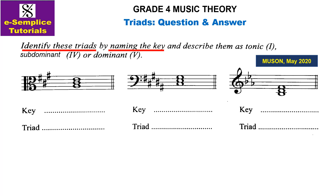This question is from Muzan May 2020. The question says: identify these triads by naming the key and describe them as tonic, subdominant, or dominant. The first triad is in alto clef with three sharps — F sharp, C sharp, and G sharp. This key signature suggests two keys: the major key with three sharps, which is A major, and its relative minor, F sharp minor. We now have to work with both.